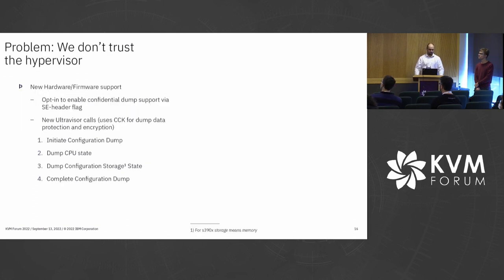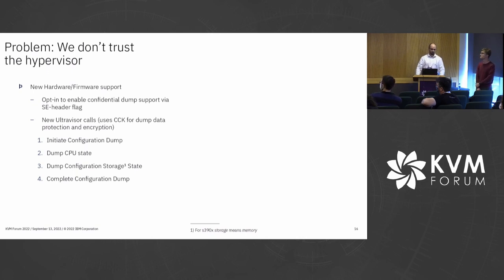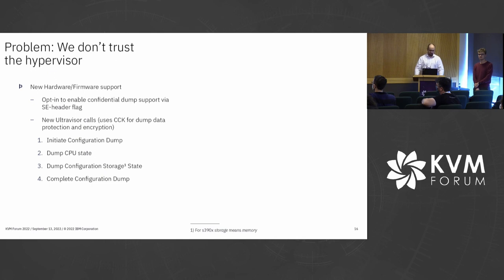Obviously, new hardware and firmware support was required. We introduced something that just requires an opt-in: you have to set in the SE image preparation to allow confidential dump, and you provide the CCK (customer communication key) that Stefan already mentioned, to do so. This key is used for the dump encryption and protection. Four new ultravisor calls were introduced: initiate configuration dump; dump CPU state; dump configuration storage state (storage means memory in S390); and complete configuration dump.